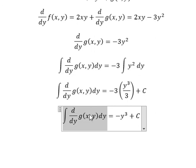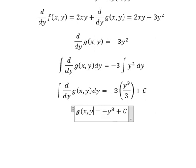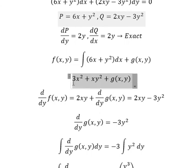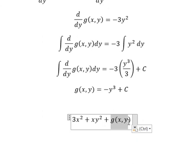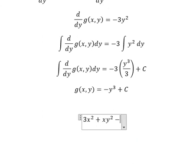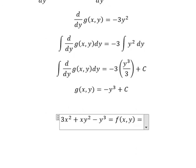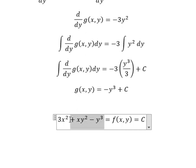Now we need to return back to combine everything. We put this in here and we have negative y to the power of 3. This equals f(x,y) equals C. So we simplify and get the final answer.